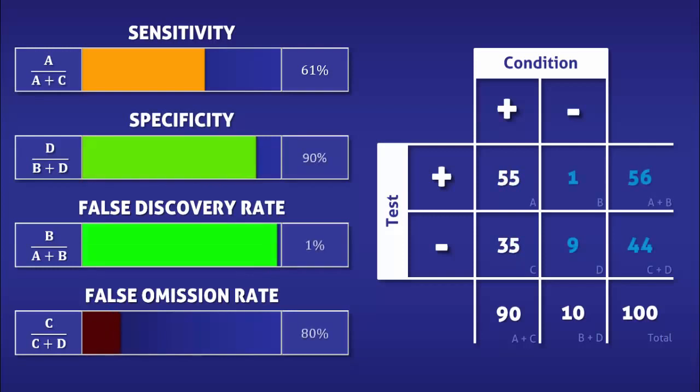Increasing the specificity of the test would decrease the proportion of positive tests that are incorrect and increase the proportion of negative tests that are correct, thus further lowering both the false discovery rate and the false omission rate respectively.